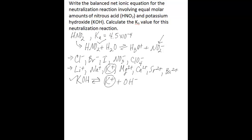Once you know this, you can use the generic form for this type of neutralization reaction — the weak acid-strong base type — to find the net ionic equation. The general form for a weak acid-strong base neutralization net ionic equation is: HA plus hydroxide going to water plus the conjugate base of your weak acid. HA is your weak acid, OH⁻ is coming from the strong base, which in this case is potassium hydroxide, and A⁻ is the conjugate base of your weak acid, which in this case is nitrite, the NO₂⁻ anion.